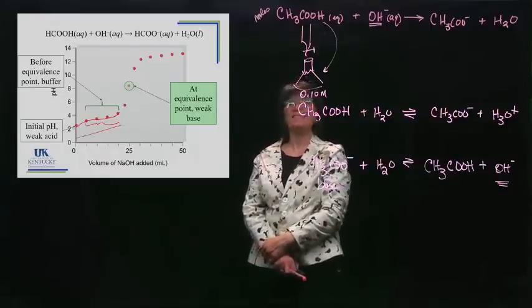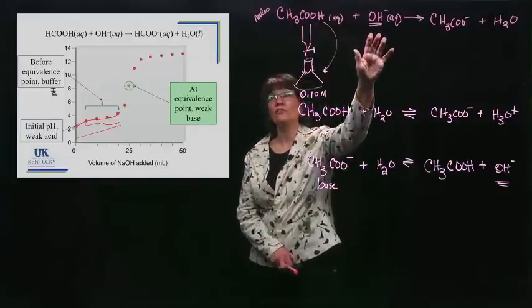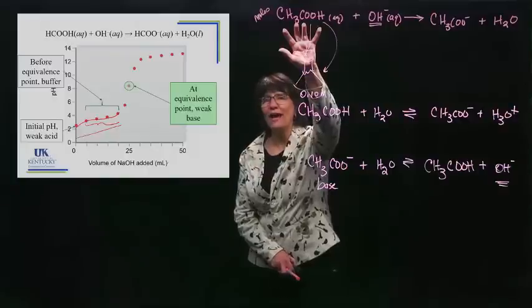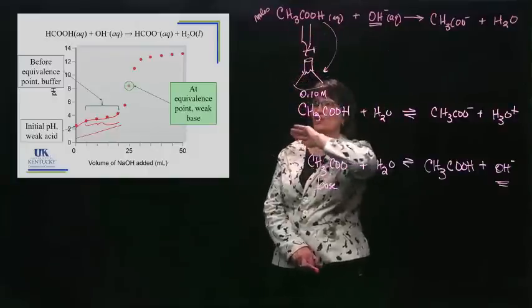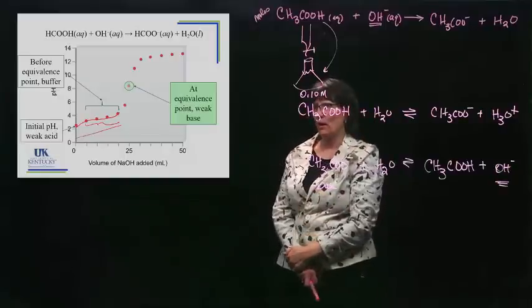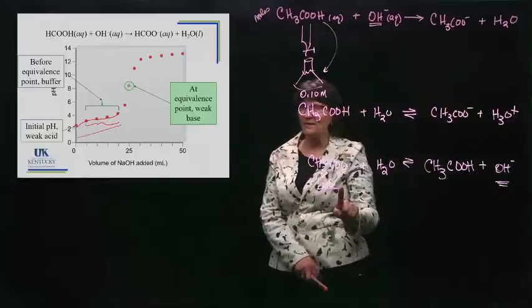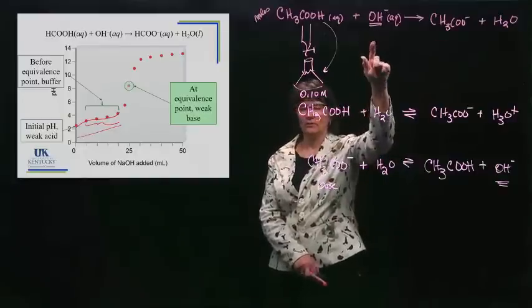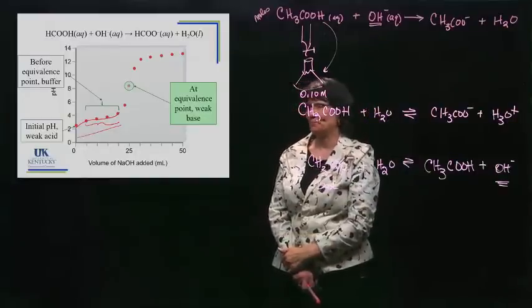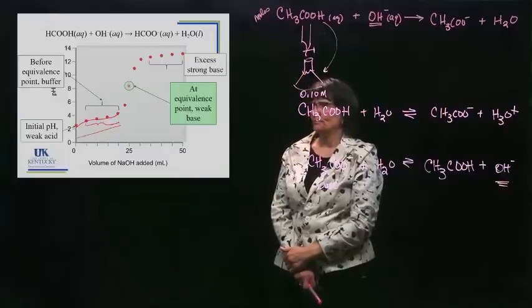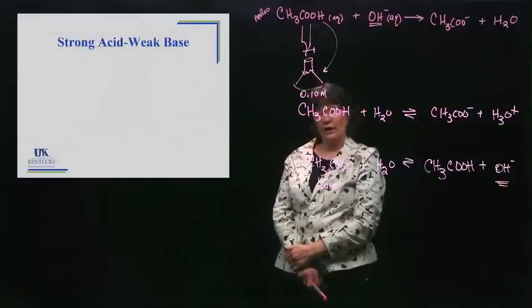Then we pass the equivalence point. We've already used up all of our acid and we start adding more base. What happens? It jumps up and just steadily climbs from that point. There's no buffer — there's just a weak base, and you're adding strong base to it. That's the graph, and it's again called a titration curve.